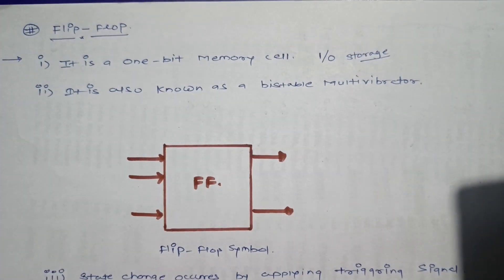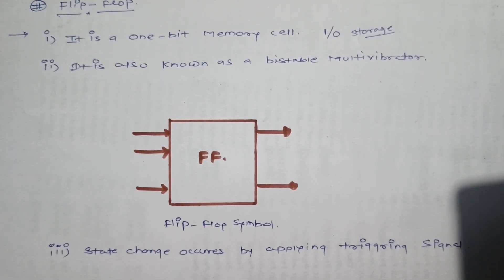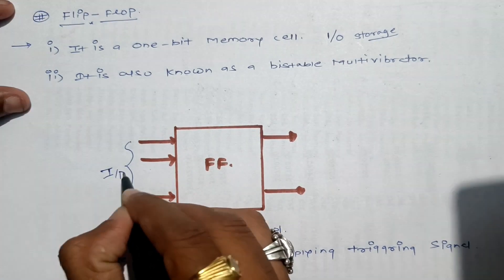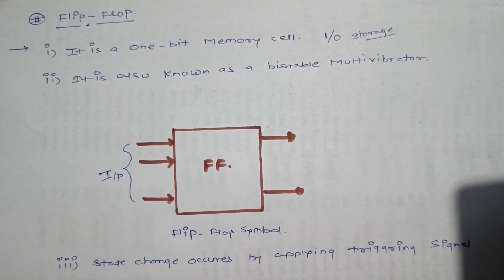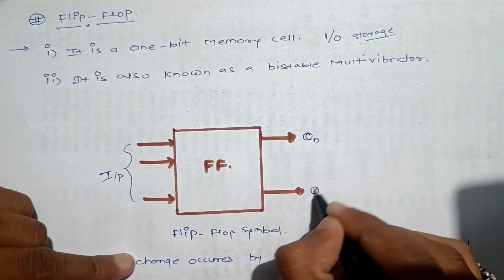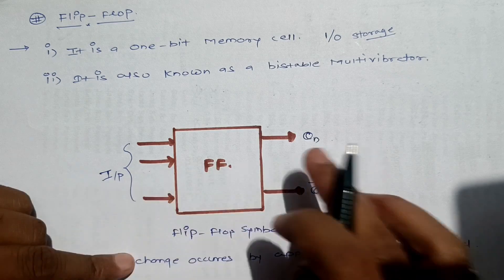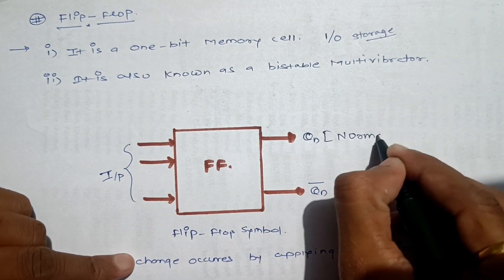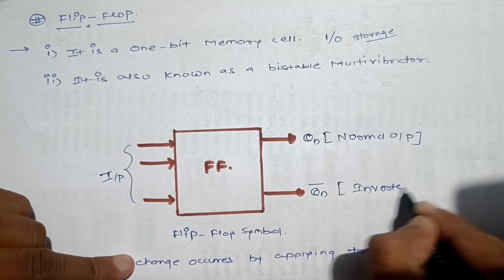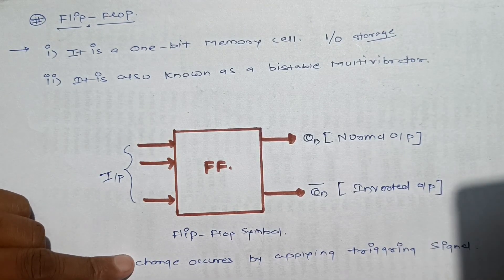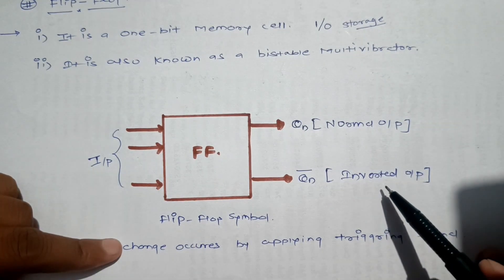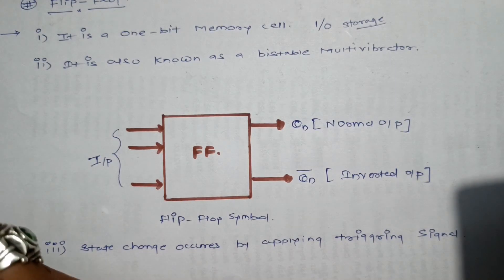A flip-flop can accept more than one input — multiple inputs. The outputs across the flip-flop are: the first is called QN, the normal output, and the second is called QN bar, which is the inverted output. So for every flip-flop we have two output states: one normal output and one inverted output.